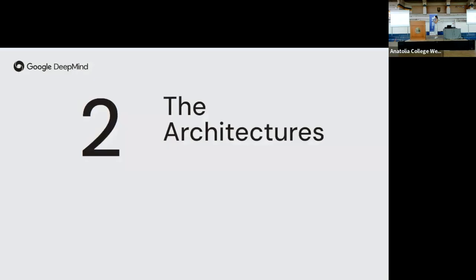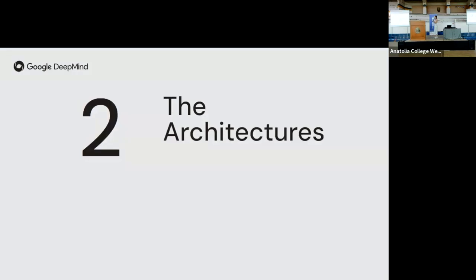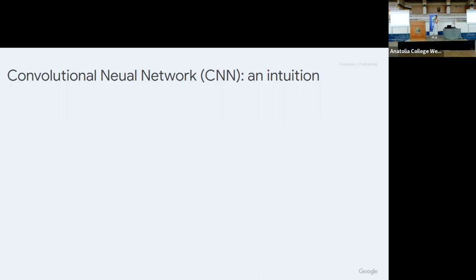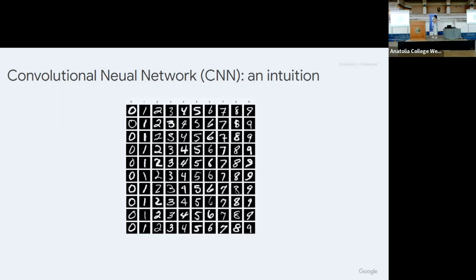Now I want to get into more detail and talk about popular architectures in computer vision. Quintessentially I want to talk about convolutional neural networks first, offering a more intuitive look. I'll take MNIST as an example. If you're not already familiar, the MNIST dataset is one of the most popular datasets in computer vision, proposed by Yann LeCun in the 90s. It features handwritten digits in grayscale, the task is digit classification with 10 classes, and images are quite small at 28 by 28 pixels.